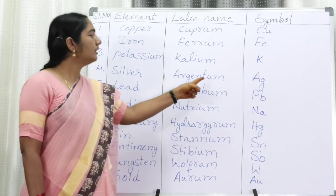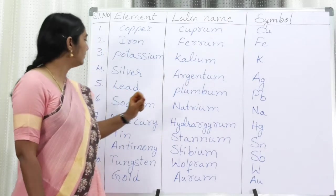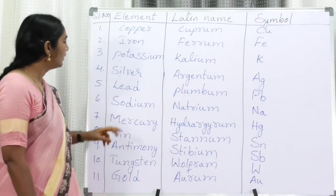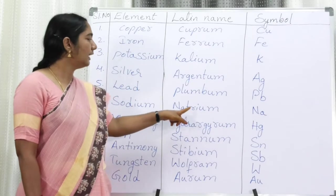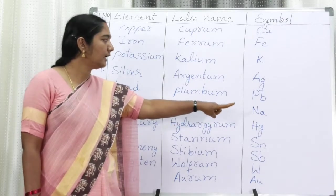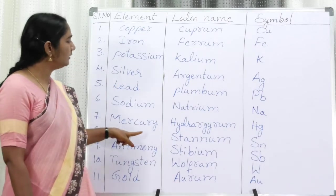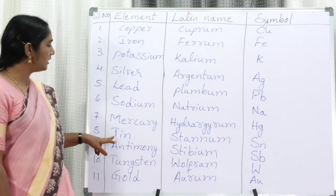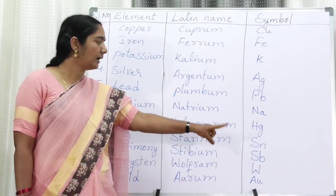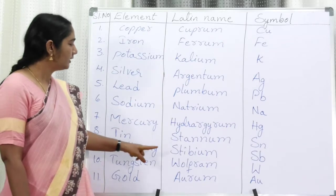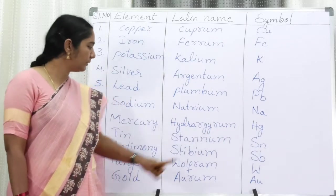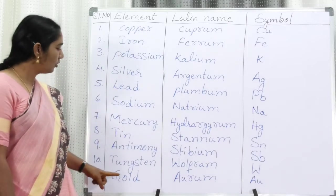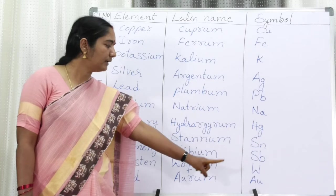Silver: the Latin name is Argentum, so the symbol is Ag — important. Lead: the Latin name is Plumbum, so the symbol is Pb (capital P, small b). Sodium: the Latin name is Natrium, so the symbol is Na (capital N, small a). Mercury: the Latin name is Hydrargyrum, so the symbol is Hg (capital H, small g). Tin: the Latin name is Stannum, so the symbol is Sn. Antimony: the Latin name is Stibium, so the symbol is Sb (capital S, small b). Tungsten: the Latin name is Wolfram, so the symbol is W. Gold: the Latin name is Aurum, so the symbol is Au (capital A, small u).